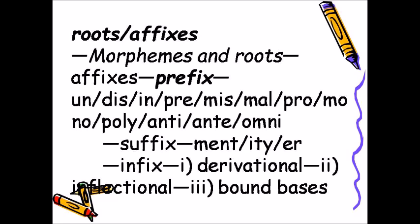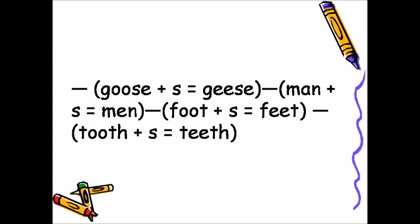Affixes include: prefix — e.g., un-, dis-, im-, pre-, mal-, pro-, mono-, poly-, anti-, omni-; suffix — e.g., -ment, -ity, -er; and infix. Affixes are classified as: (1) derivational, (2) inflectional, and (3) bound bases. Examples of inflection: goose + s = geese; man + s = men; foot + s = feet; tooth + s = teeth.